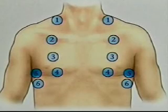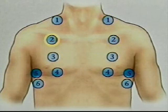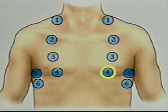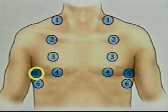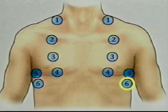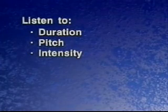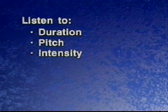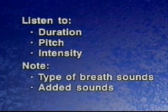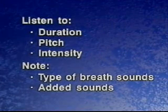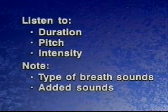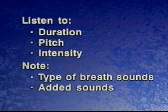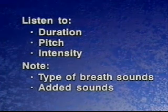To auscultate the anterior chest, take the same systematic approach you used for percussing the anterior thorax. If necessary, gently displace the patient's breasts to auscultate all important areas. Listen to the duration, pitch, and intensity of the inspiratory and expiratory sounds. Decide what type of breath sounds you are hearing, and note any added sounds. If you hear heart sounds near the heart, try to ignore them while you concentrate on the breath sounds.